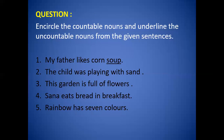Now come to the next question: encircle the countable nouns and underline the uncountable nouns from the given sentences. 'My father likes corn soup' — father is countable and soup is uncountable, so I have encircled the word father and soup is underlined. In the same way you have to do the remaining sentences. 'The child was playing with sand' — child is countable and sand is uncountable. 'The garden is full of flowers' — garden is countable and flowers is an uncountable noun. 'Sana is eating breakfast' — Sana is countable and breakfast is uncountable. 'Rainbow has seven colors' — colors are countable nouns and rainbow is uncountable.